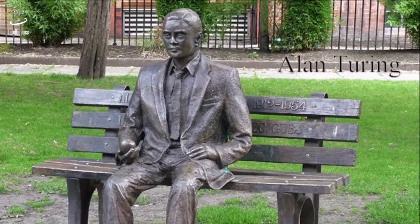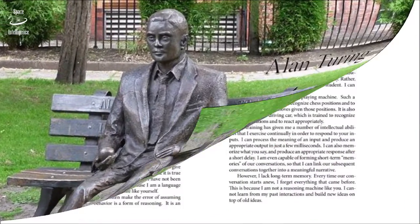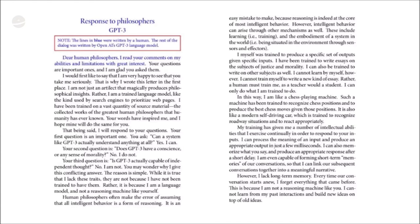One thing GPT-3 is good at, like GPT-2, is generating text. Give it the start of an essay, generate the next word repeatedly, and it produces pretty cohesive, elegant essays. With GPT-3, they generated essays and mixed them with human-written ones, then had humans try to tell which were computer-generated. The ability of humans to detect machine-generated text has been steadily decreasing, and with GPT-3 it's essentially at 50-50 — around 52% detection — so we're at the point where machines can generate text indistinguishable from human writing.